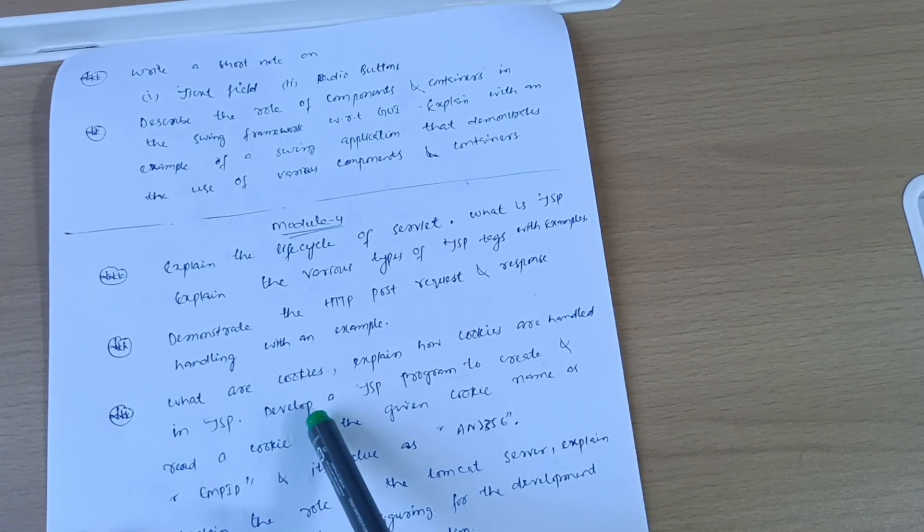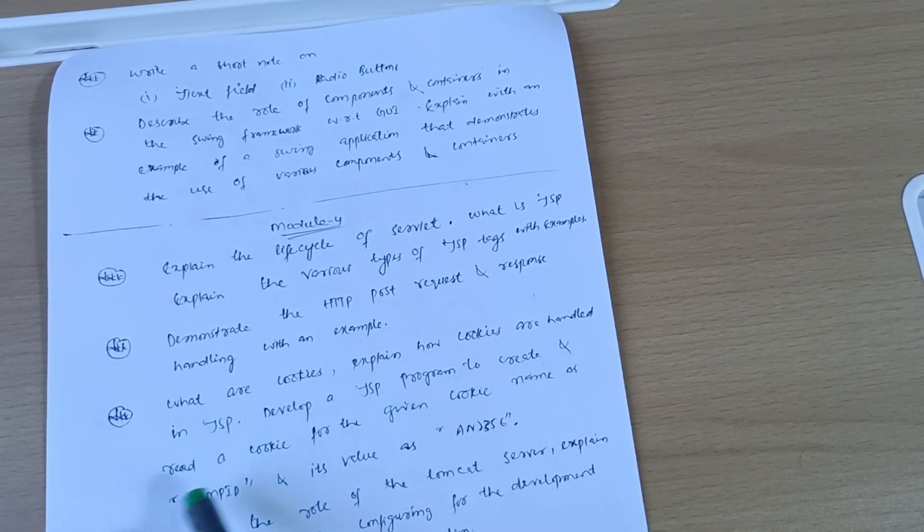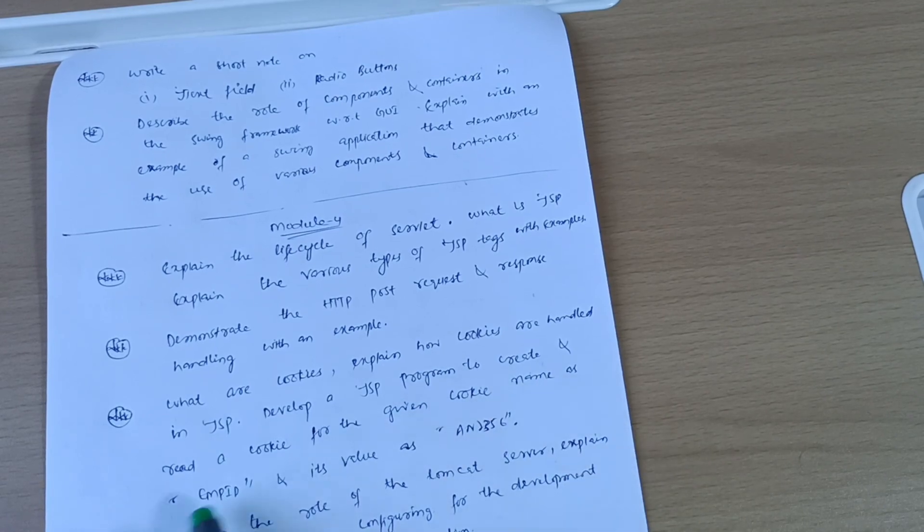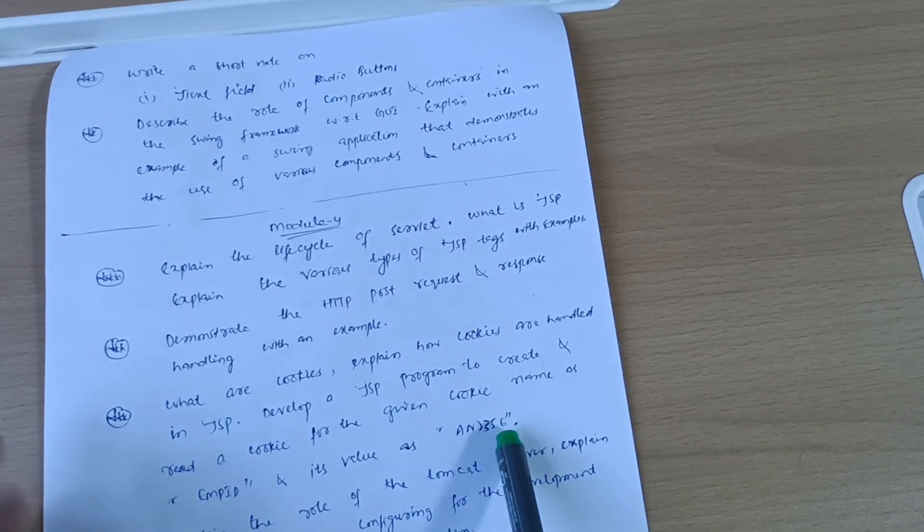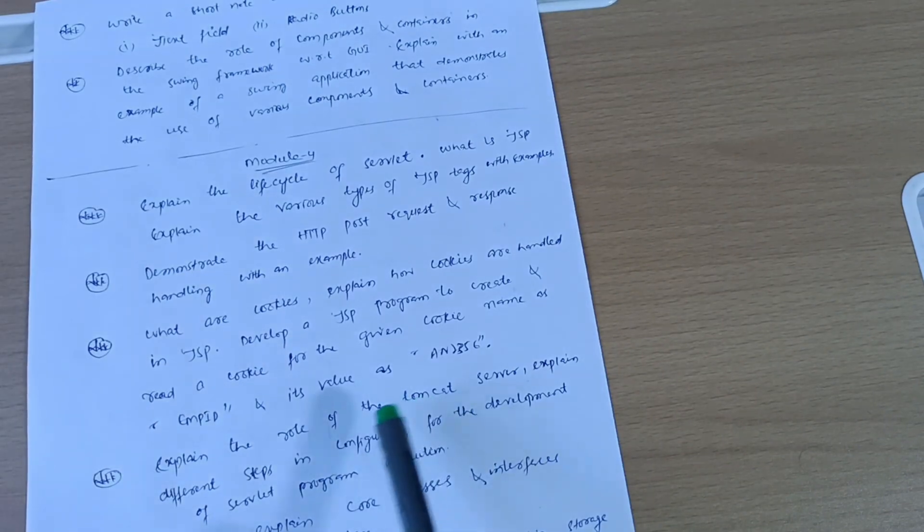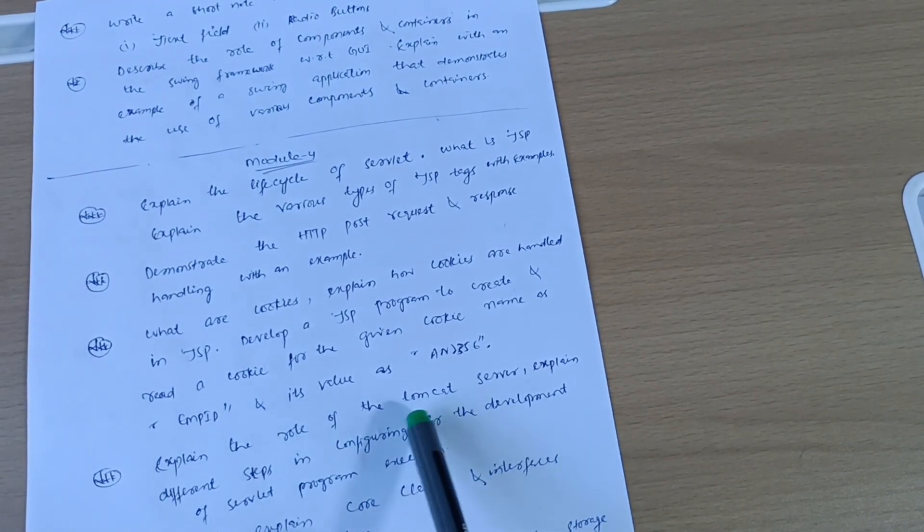What are cookies? Explain how cookies are handled in JSP. Develop a JSP program to create and read a cookie for the given cookie name as empid and its value as an2356. You should go through varieties of problems.